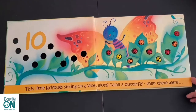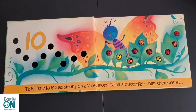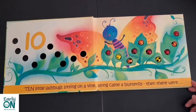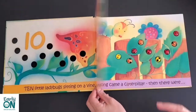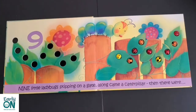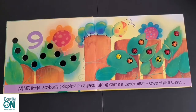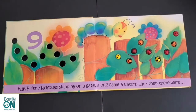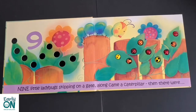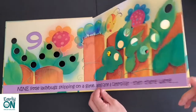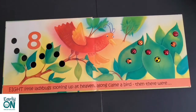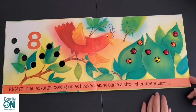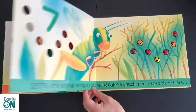Ten little ladybugs sitting on a vine. Along came a butterfly, then there were nine. Nine little ladybugs skipping on a gate. Along came a caterpillar, then there were eight. Eight little ladybugs looking up at heaven. Along came a bird, and then there were seven.